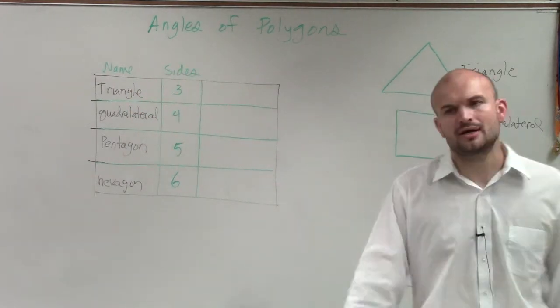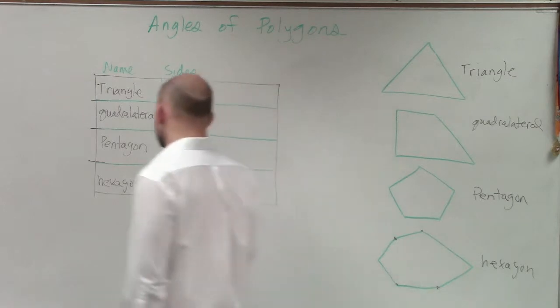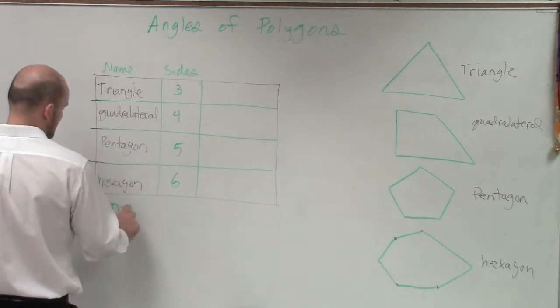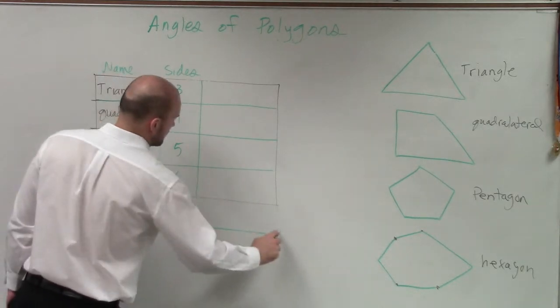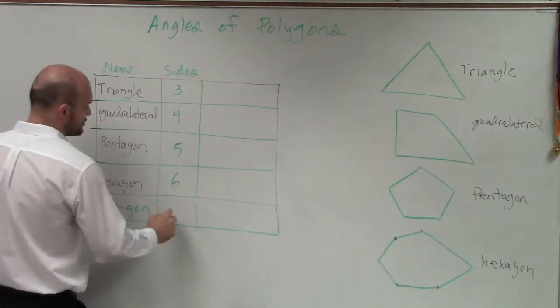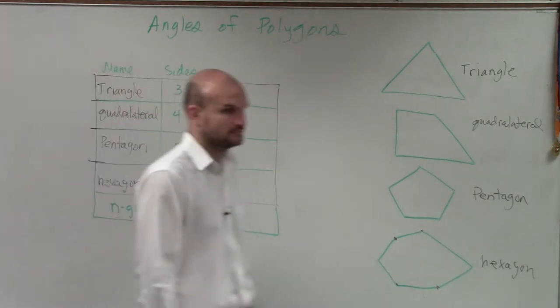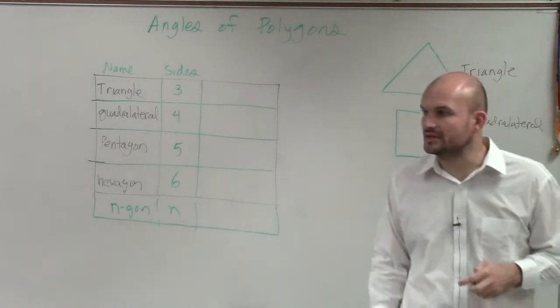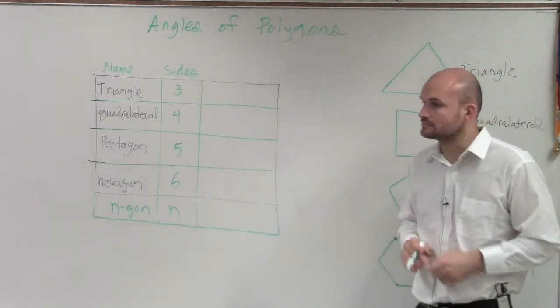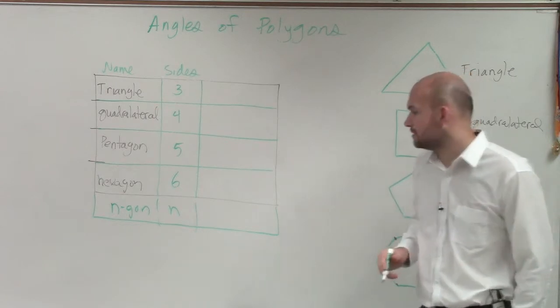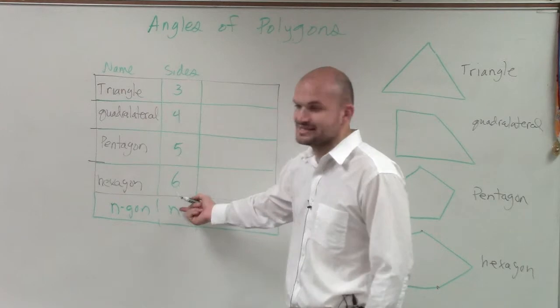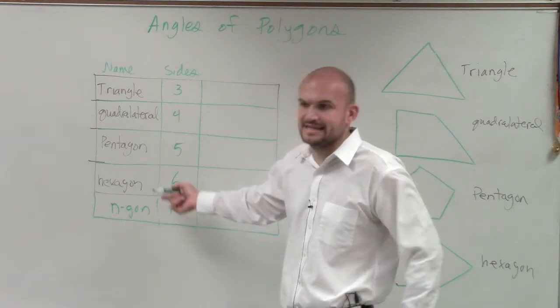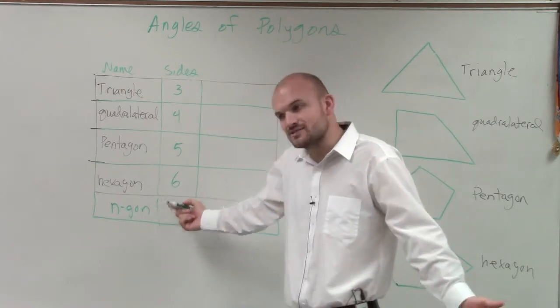And we'll go on in more and more examples. And then let's do the last one, which we'll call an n-gon. Which means the number of sides is going to be n. What if I said it has n sides, 10 sides, 11 sides, 18? We don't know the number of sides, so we'll call it n.